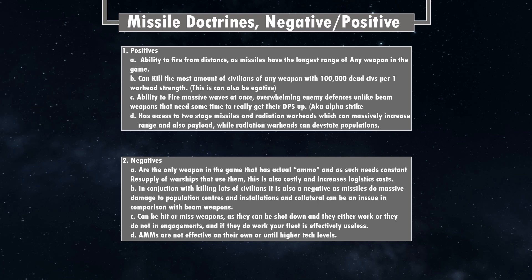Now the negatives of missile doctrine. Negative A: missiles are the only weapon in the game that requires actual ammunition, meaning constant resupply of warships. This is costly, and on top of that, weapons can malfunction and cost MSP — a box launcher or particle lance can both malfunction. With missiles specifically you must have a logistics chain, be producing ordnance, and keep supplies up. With beam weapons you just put them on the ship and can fire them essentially indefinitely.